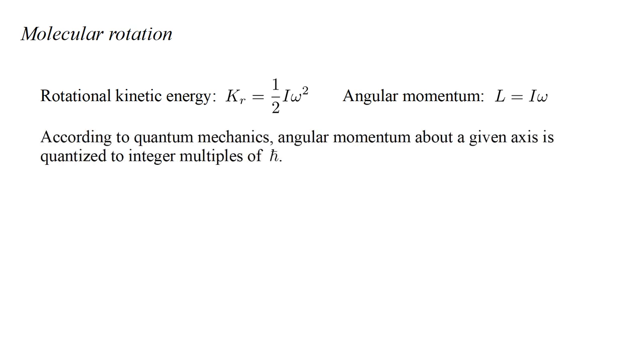Another manifestation of quantum mechanics is in molecular rotation. The kinetic energy associated with rotation about a single axis is one-half I omega squared, with I the moment of inertia about that axis. The corresponding angular momentum is L equals I omega. According to quantum mechanics, angular momentum about a given axis is quantized to integer multiples of H-bar, Planck's constant over 2 pi. If we set L equal to H-bar, then omega equals H-bar over I. Substituting this into the kinetic energy expression, we get H-bar squared over 2I.